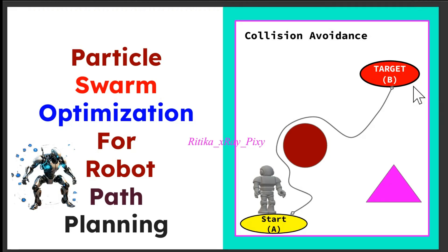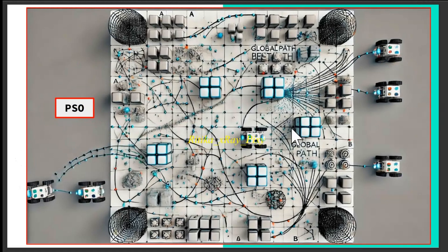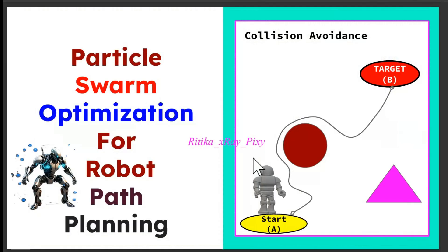In the next video, we will discuss how to use the PSO algorithm for robot path planning in a dynamic environment with moving obstacles and a moving target, using a numerical example and Python code. That's all for this video — if you have any questions you can comment below, and thanks for watching.